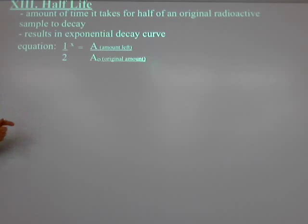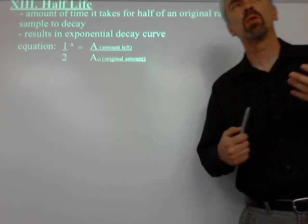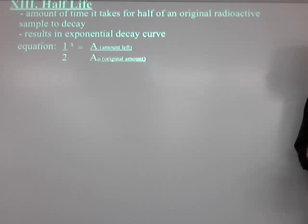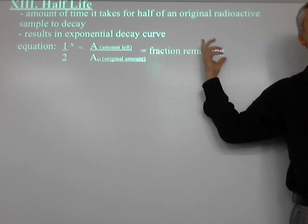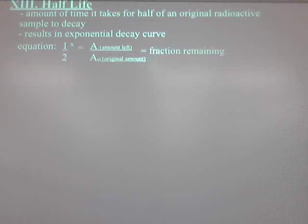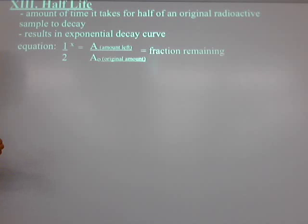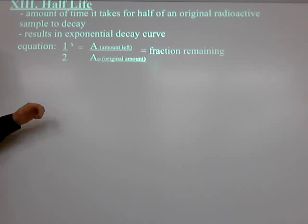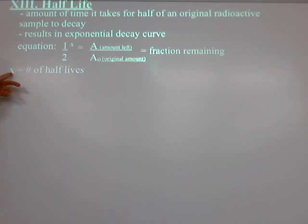I find this equation much more intuitive and understandable than an equation that just has a rate constant using E — it's very non-intuitive if you haven't had calculus. Here's the equation: one-half to the x power equals A over A-sub-zero, the fraction that's left. X is the number of half-lives. A over A-sub-zero is the fraction remaining — the actual fraction, not percentage.